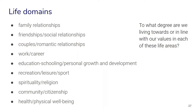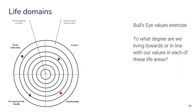Psychologists sometimes differentiate different life domains to help us think about to what degree we are living towards or in line with our values in each of these different life areas — from family relationships to work and career and our own physical and mental health. In each of these areas we can look at how we are doing in terms of valued living. In a shorter format there is also the so-called bullseye values exercise, where we can regularly evaluate how we are living in line with our values in several areas of life.